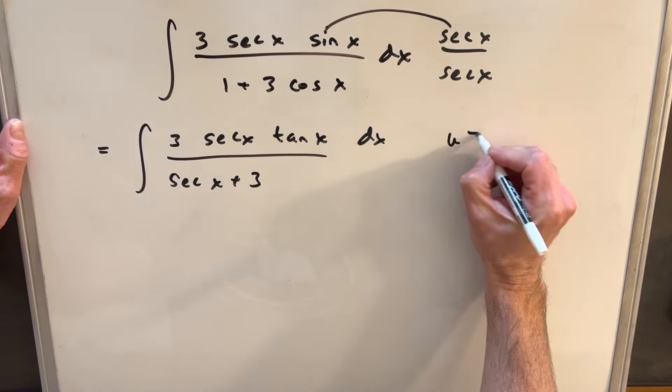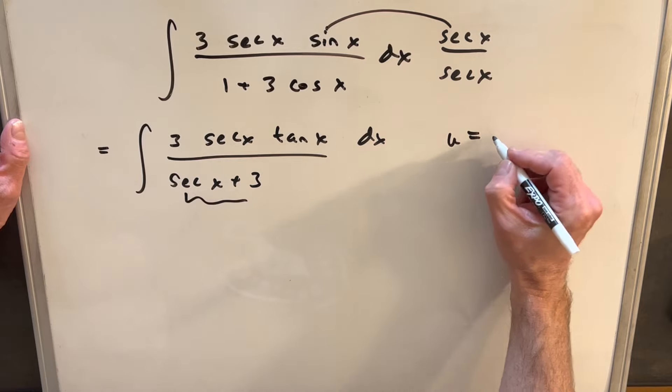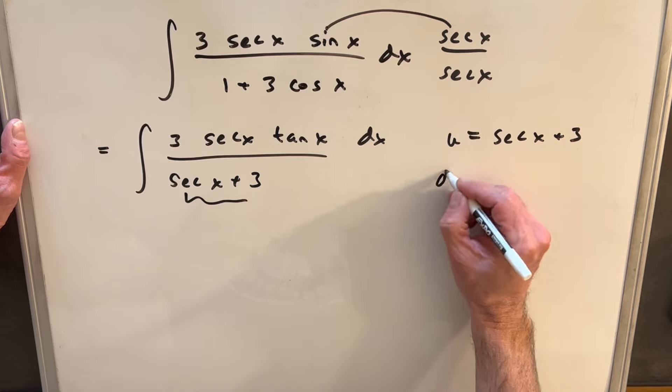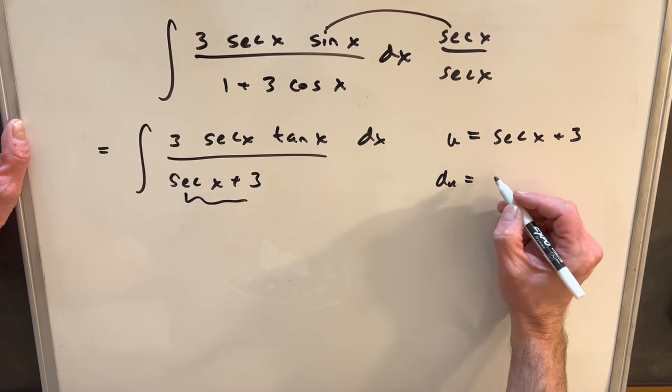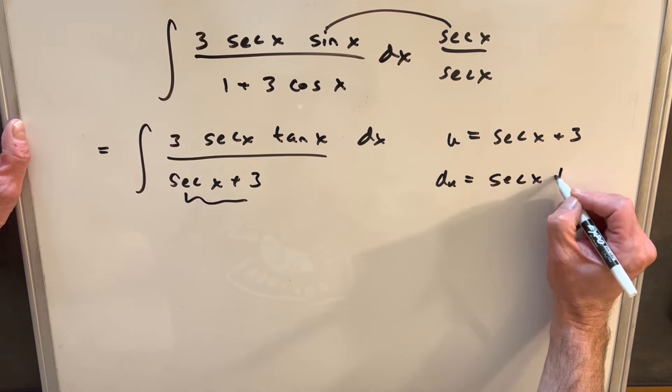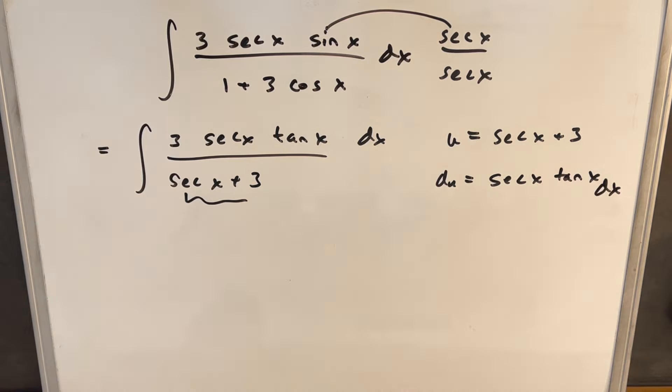So now what I'll do is make a u substitution here. We'll call our u secant x plus 3. So then what's our du going to be? du is just going to be secant x tan x dx.